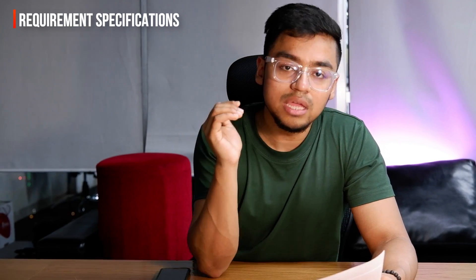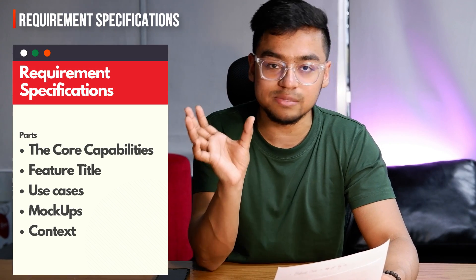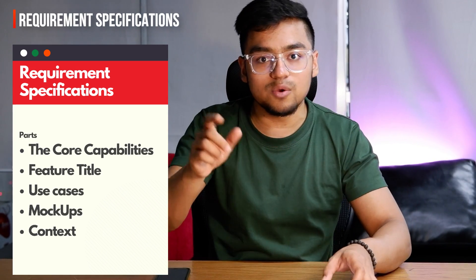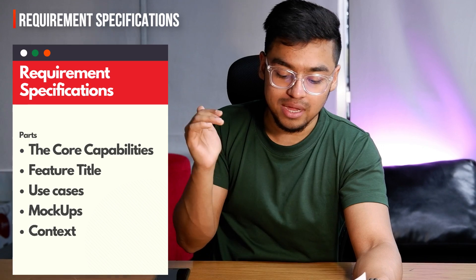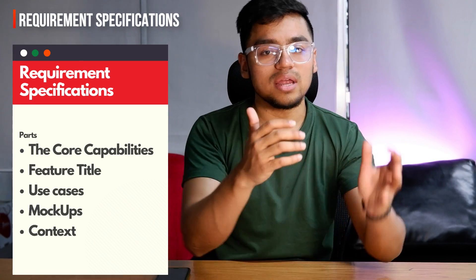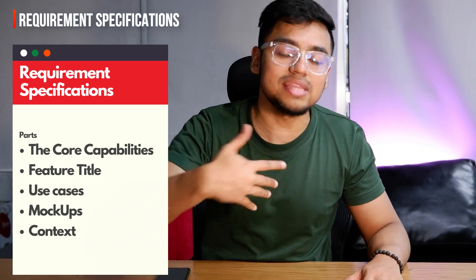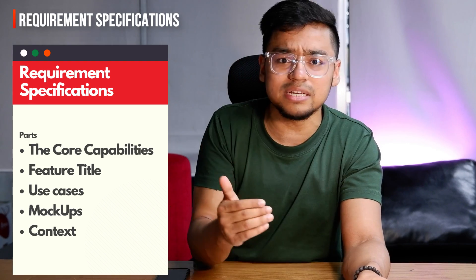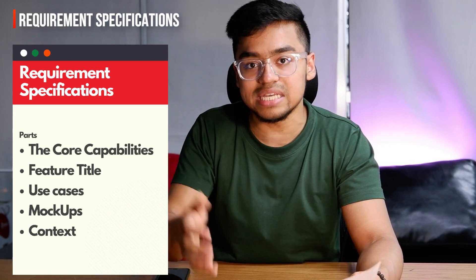In the requirement specification section, I want to keep a table with a few titles. Number one: core capabilities — explaining the core capabilities of the feature. I'll keep a feature number corresponding to the JIRA number, a feature title, and some use cases — meaning in what context will this feature be used, or what task will the user be trying to accomplish. This sets context for the developer so they understand the purpose of the feature.